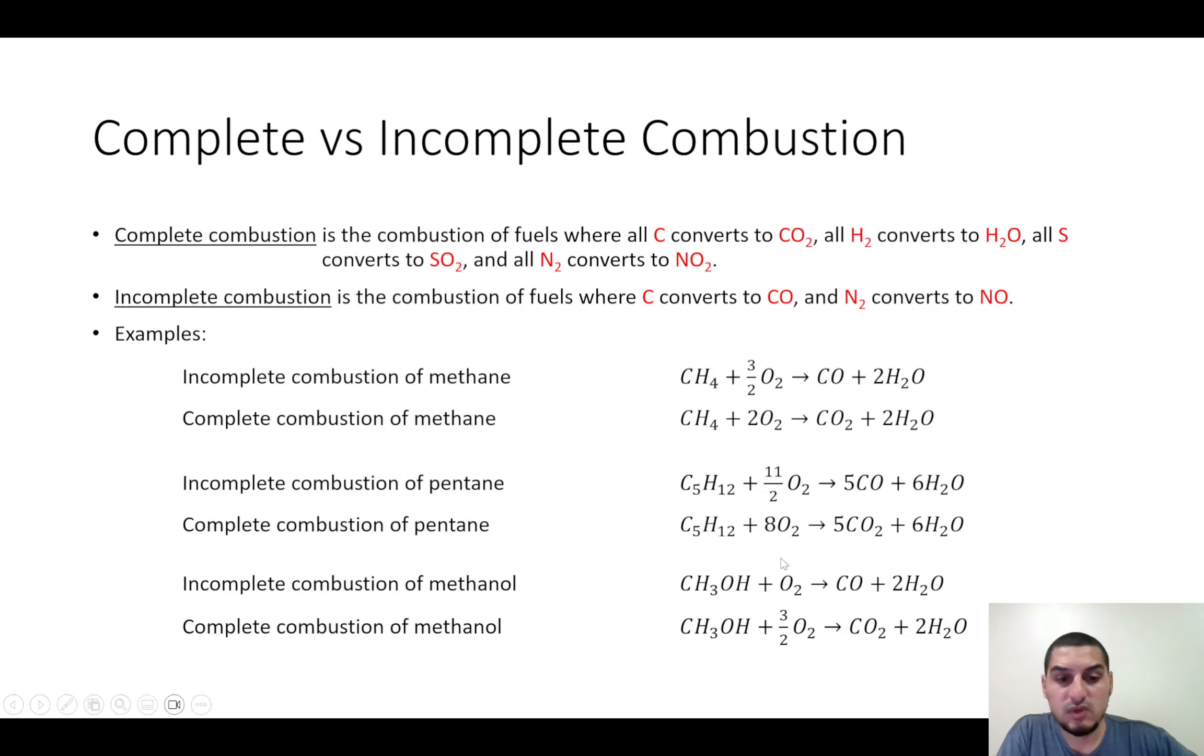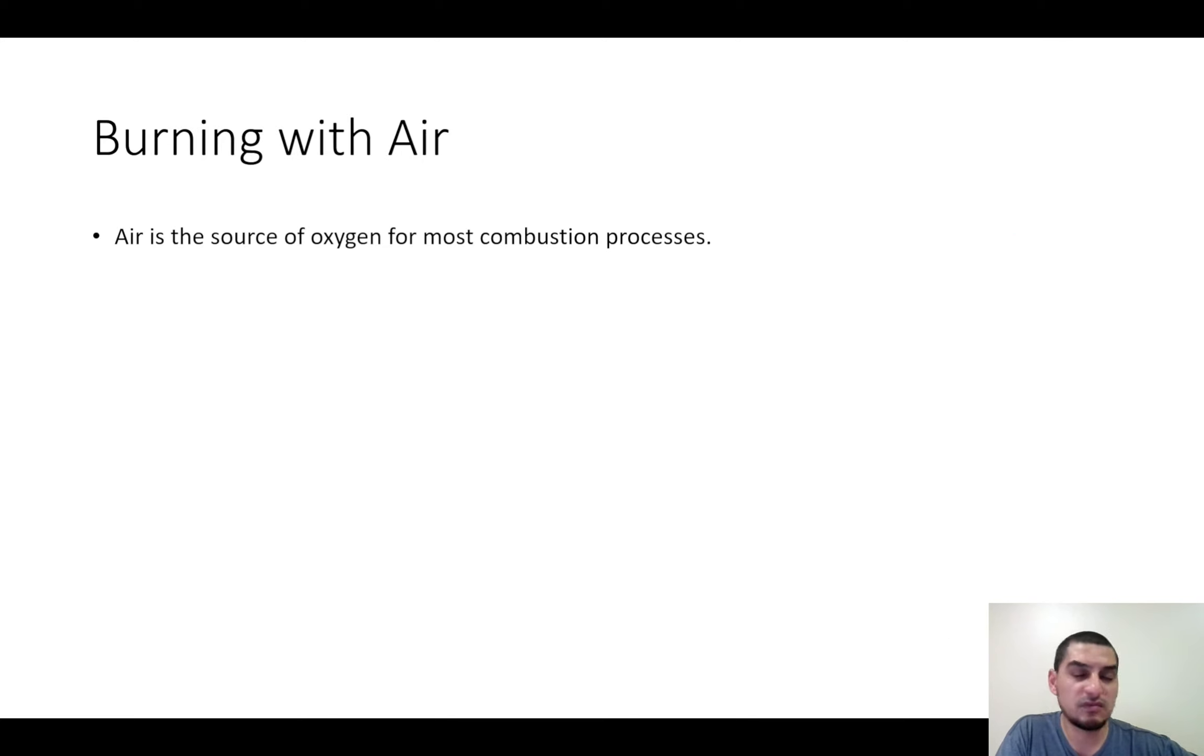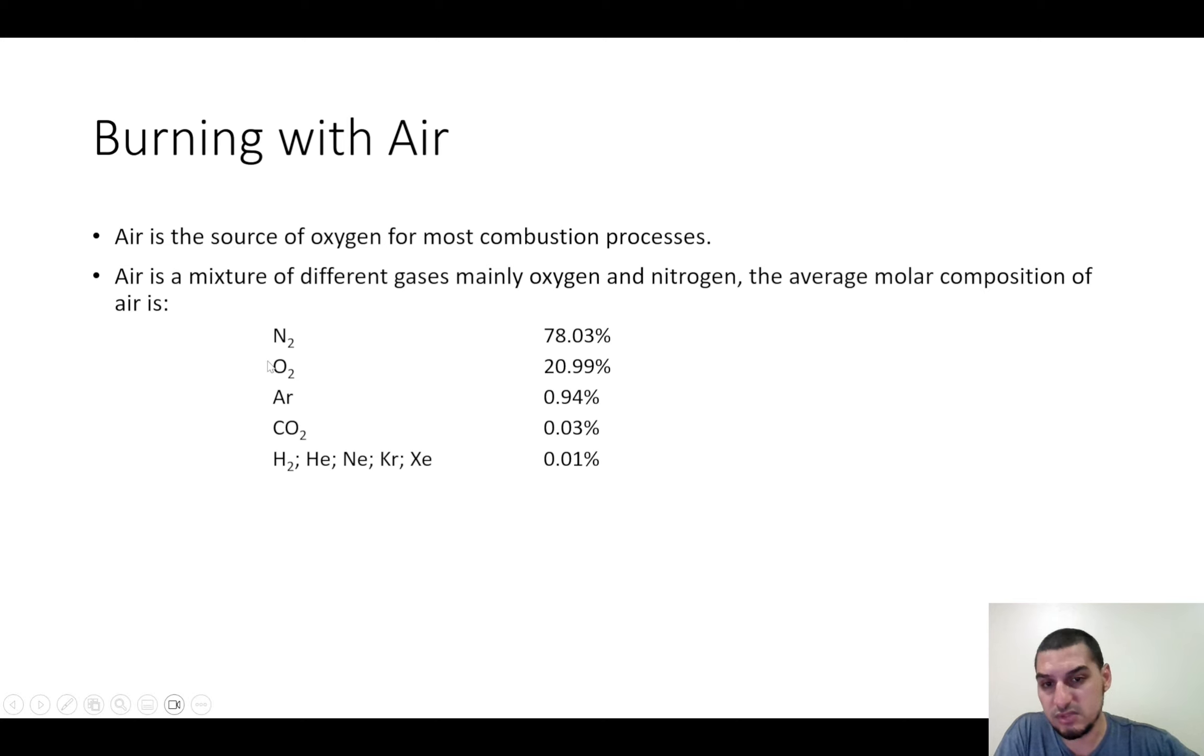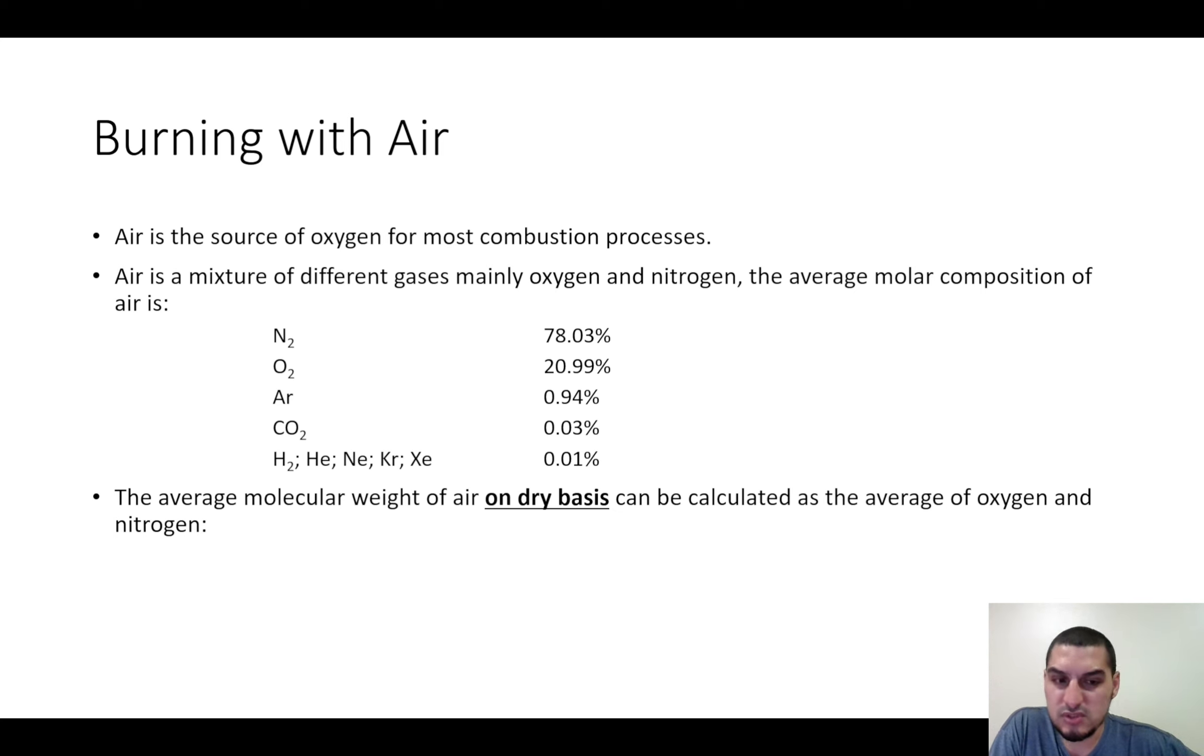For these equations that we have here, we are writing the equation assuming that we have oxygen only. But usually, in most cases, we don't provide just oxygen. We provide air for combustion, and this air is not only oxygen. We know that air consists of different gases. The main constituents of air are oxygen and nitrogen. There are almost less than 1% of other gases like argon, CO2, water vapor. But the majority of the components in the air are oxygen and nitrogen. These 1% are mainly non-combustible materials or gases. To simplify things for us in the calculations, we can consider that air consists of 21% oxygen and 79% nitrogen, which is a very good approximation.